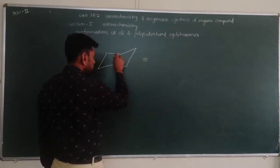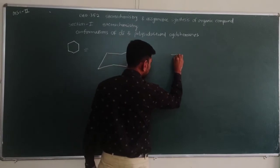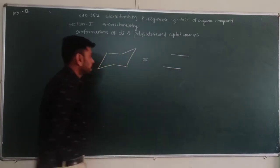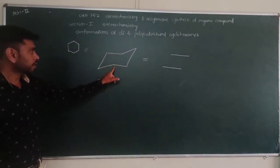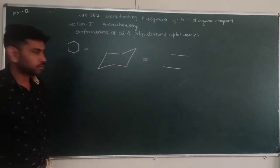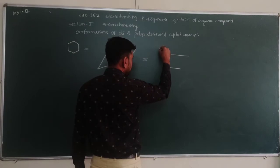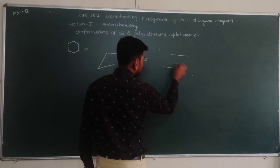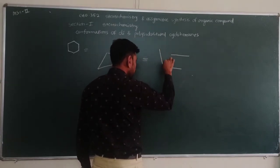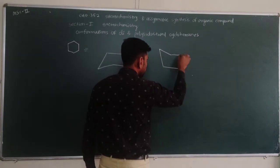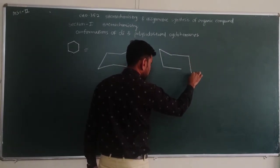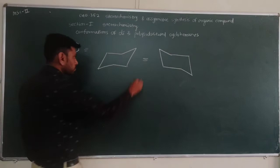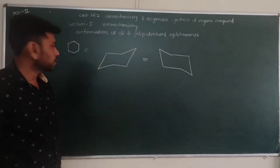So this is a chair conformation. One another form of chair conformation: draw parallel lines in this manner — first draw this line, then another line starting from the half of the first line. In this form, draw parallel lines this way and again make two dots showing the carbons, connecting to give another chair conformation. Both are interconvertible.